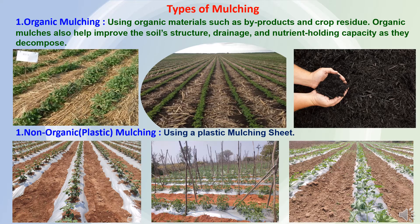Now, types of mulching. Mulching is of two types: first is organic mulching, and second is non-organic, which is also known as plastic mulching, inorganic mulching, or synthetic mulching.